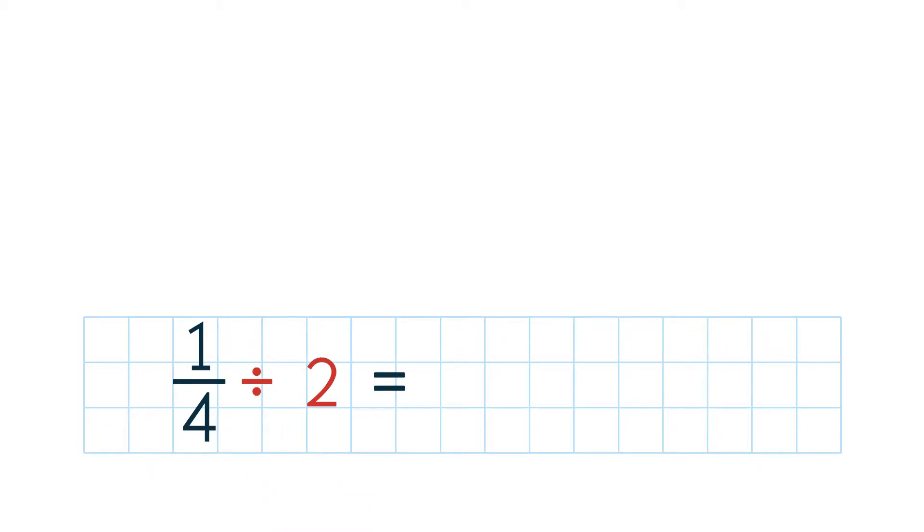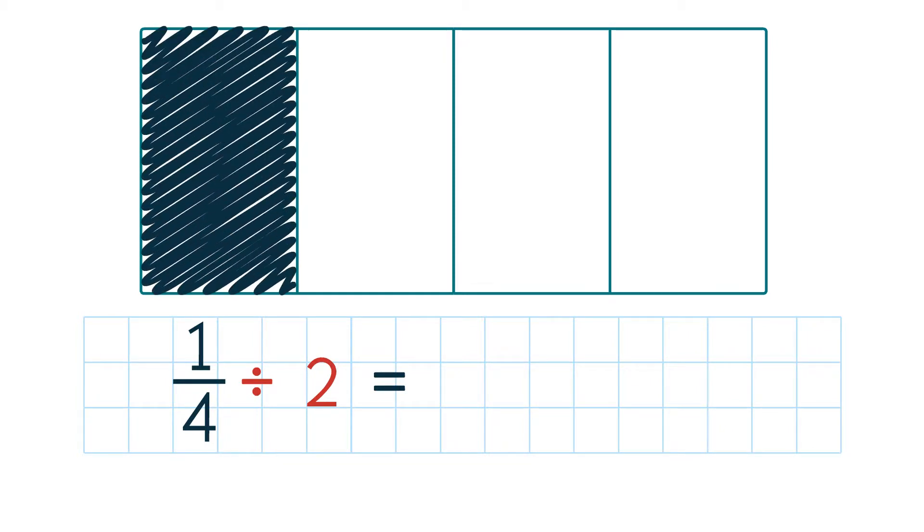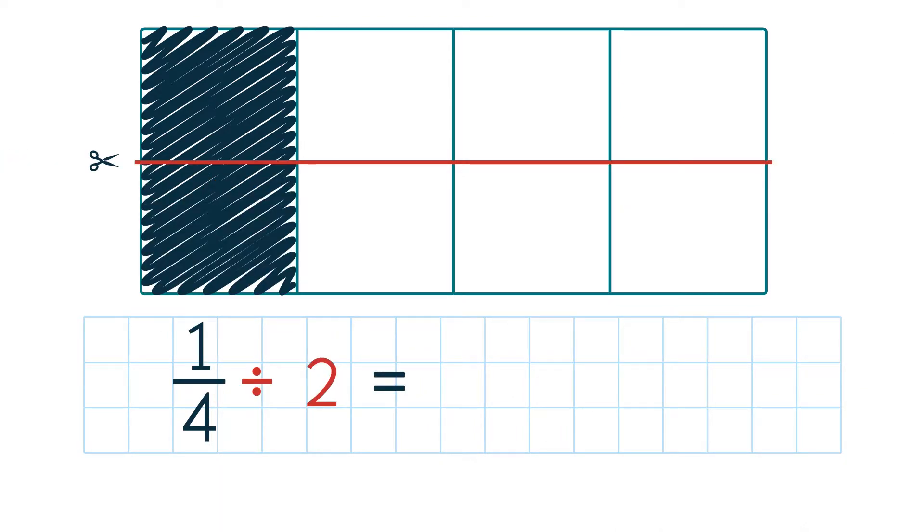Let's draw it out. We divide one rectangle into four equal parts. One of the four parts represents 1 4th. We divide the model into two equal parts, like if we use scissors to cut the model.